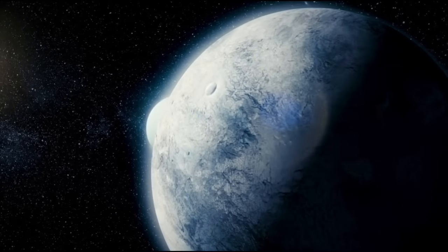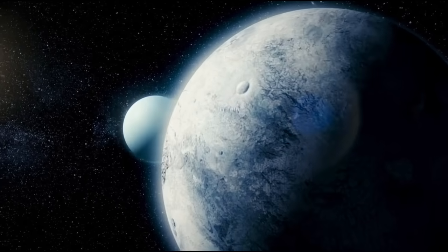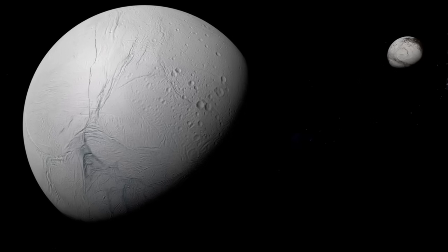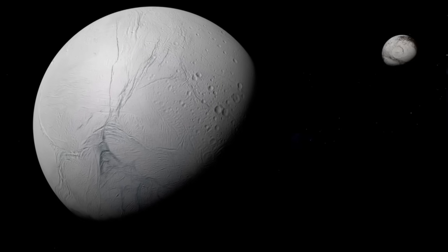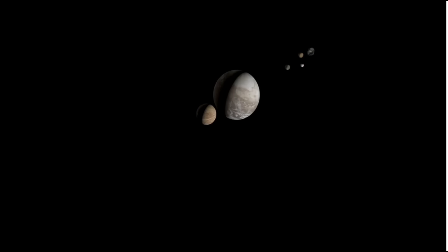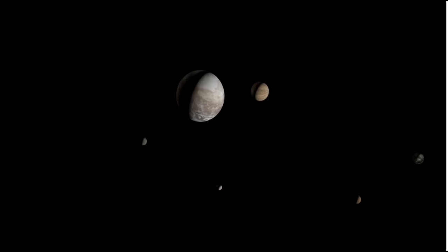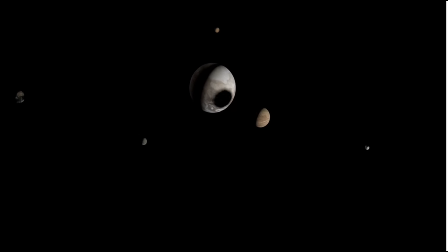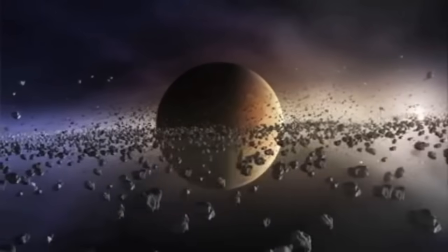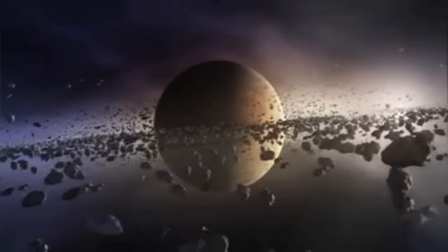A member of the Cardiff University team explained that this challenge was met by analyzing light from K2-18b's host star as it passed through the planet's atmosphere. K2-18b is classified as a transiting exoplanet, meaning its brightness diminishes when it crosses in front of its host star. This is how NASA's K2 mission first identified this exoplanet.